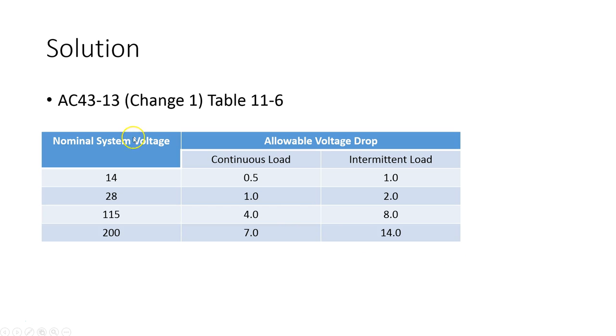So if we refer to advisory circular 4313 we will see in table 11.6 that I have a 28V system and I have continuous load. Then the allowed voltage drop is 1V.